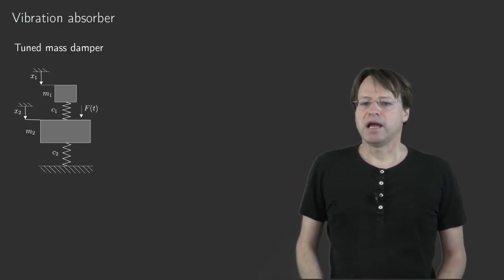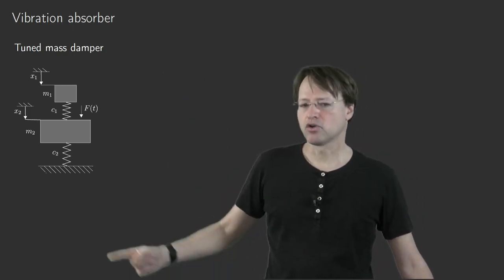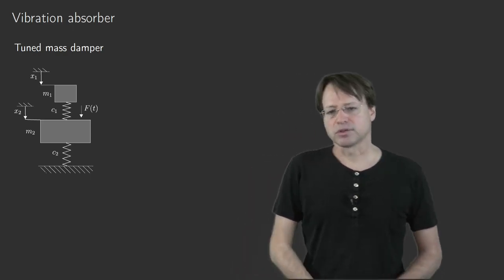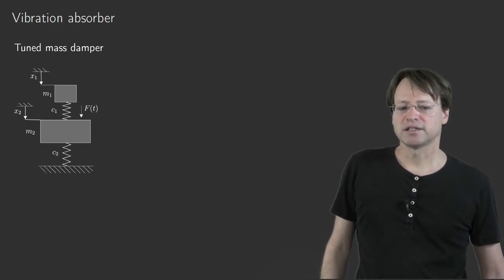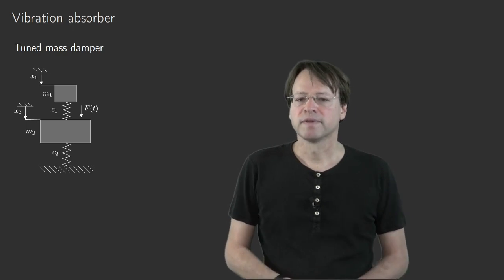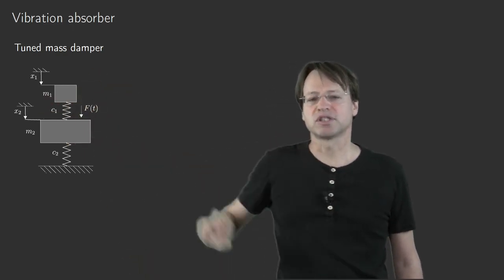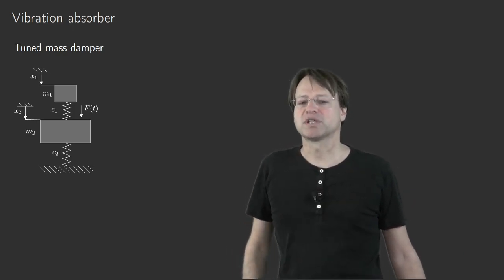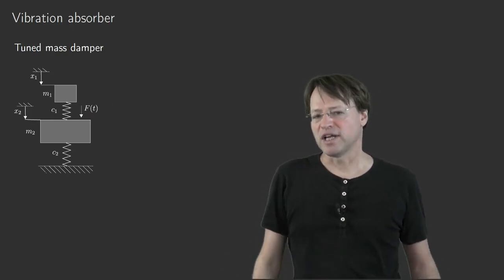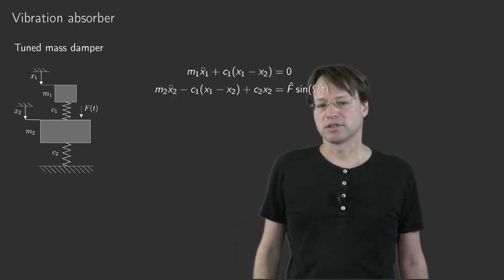Let's look at the two degree of freedom system. For the moment, assume there is no foundation excitation but an external harmonic force F(t) = F̂·sin(Ω·t) with excitation frequency Ω. The idea is to study this system as a vibration absorber, where the single degree of freedom subsystem should delete the force — the same magnitude but opposite phase — absorbing F(t) such that mass m2 is at rest.